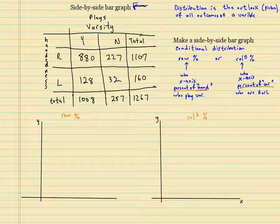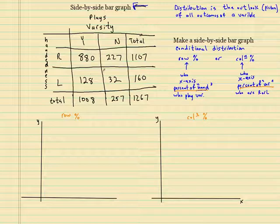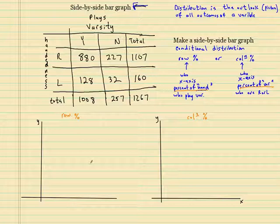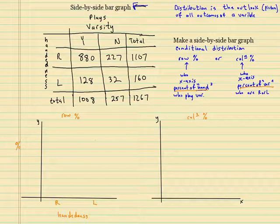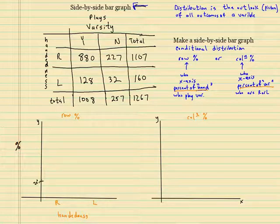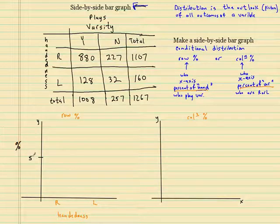So let's do this would be my row percent. Let this one be my column percent. For my row percent, I'm interested in the percentage of right-handers who play sports or the percentage of left-handers who play varsity sports. So the x-axis of the people that I'm interested in is handedness. That's the variable. This variable has two outcomes. The two outcomes are right and left. You list those down there. And this you could just put percent for now. Just make sure you label it.